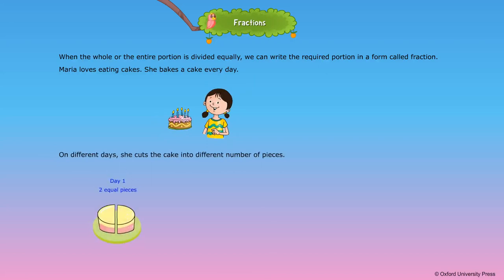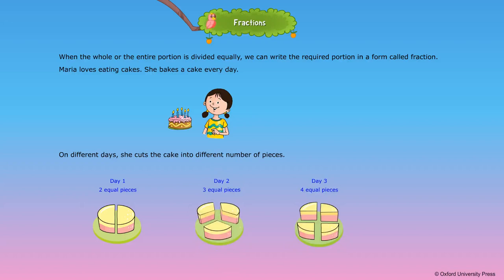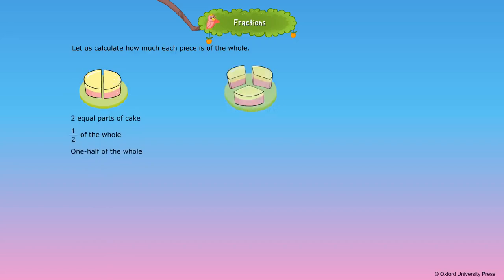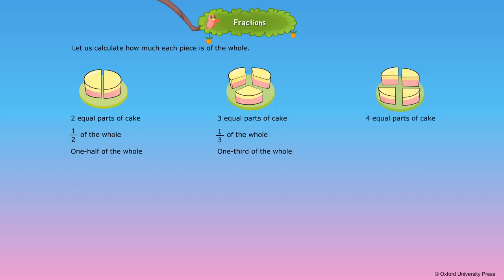On day one she cuts two equal pieces, on day two she cuts three equal pieces, on day three she cuts four equal pieces. Let us calculate how much each piece is of the whole. Two equal parts of the cake is one half of the whole. Three equal parts of the cake is one third of the whole. Four equal parts of the cake is one fourth of the whole.